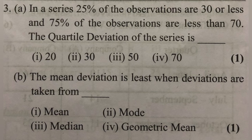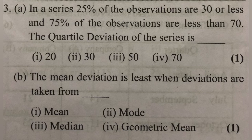The left side is the same as 25% of the quartile. We can see how much data we can consider — it is 30. The value of Q1 is 30 and Q3 is 70. Q3 minus Q1 is 70 minus 30, divided by 2, giving us the quartile deviation answer of 20.